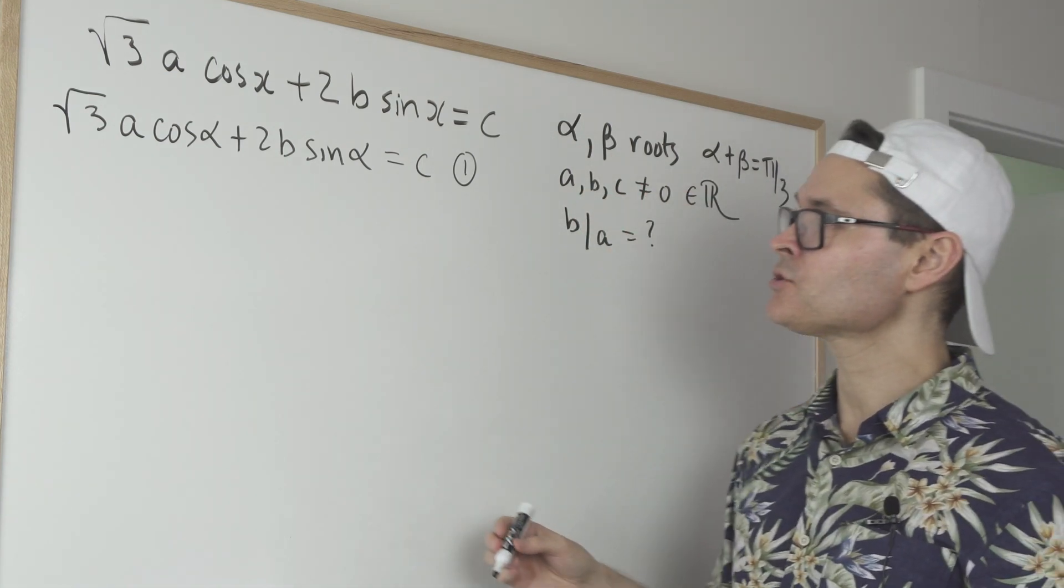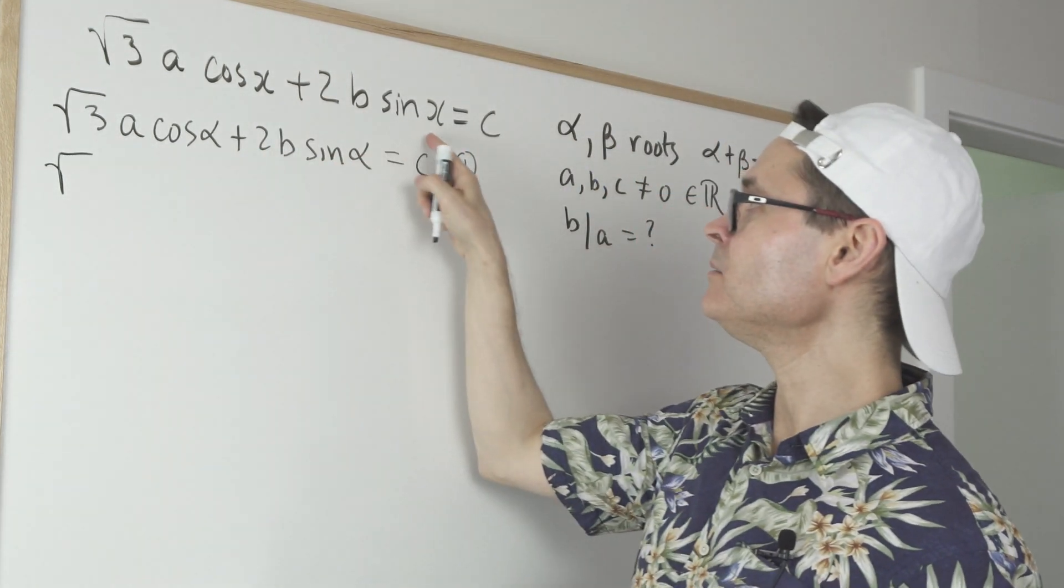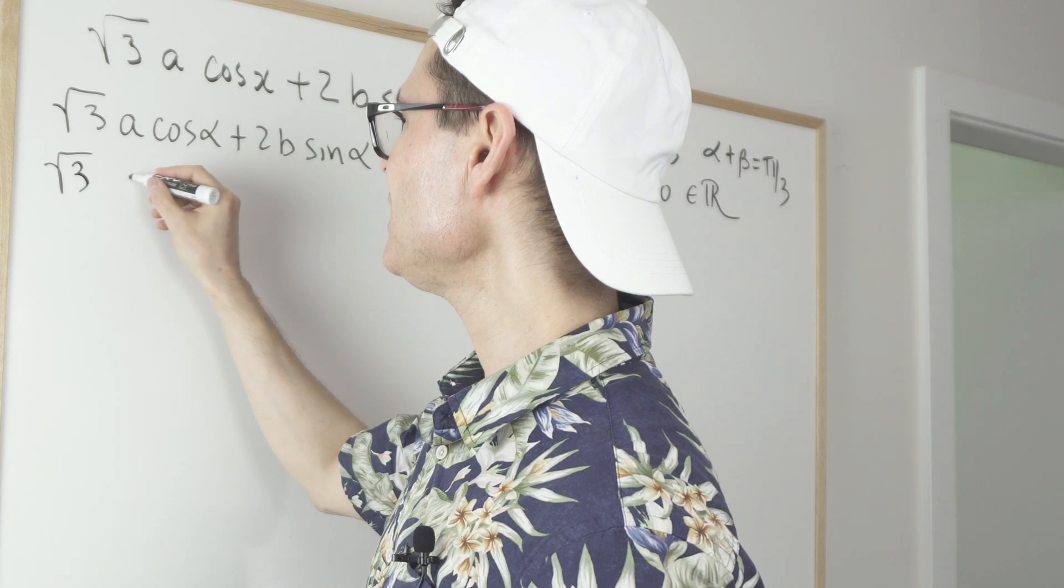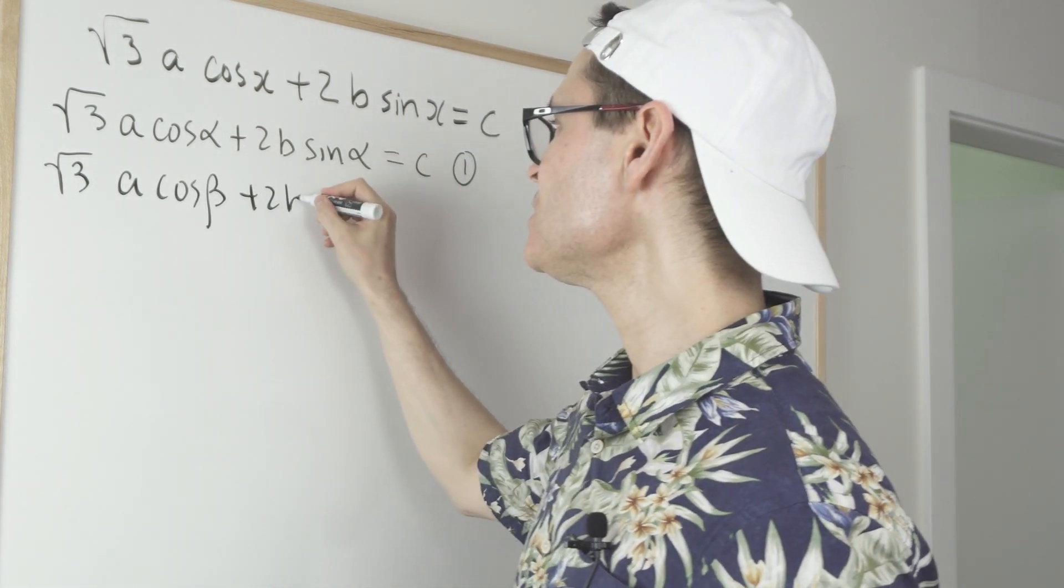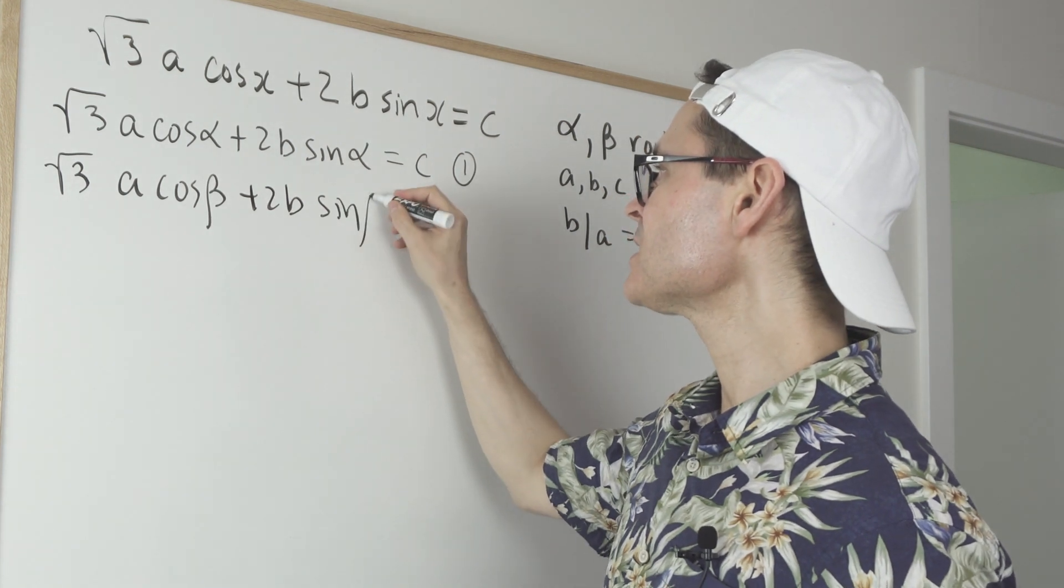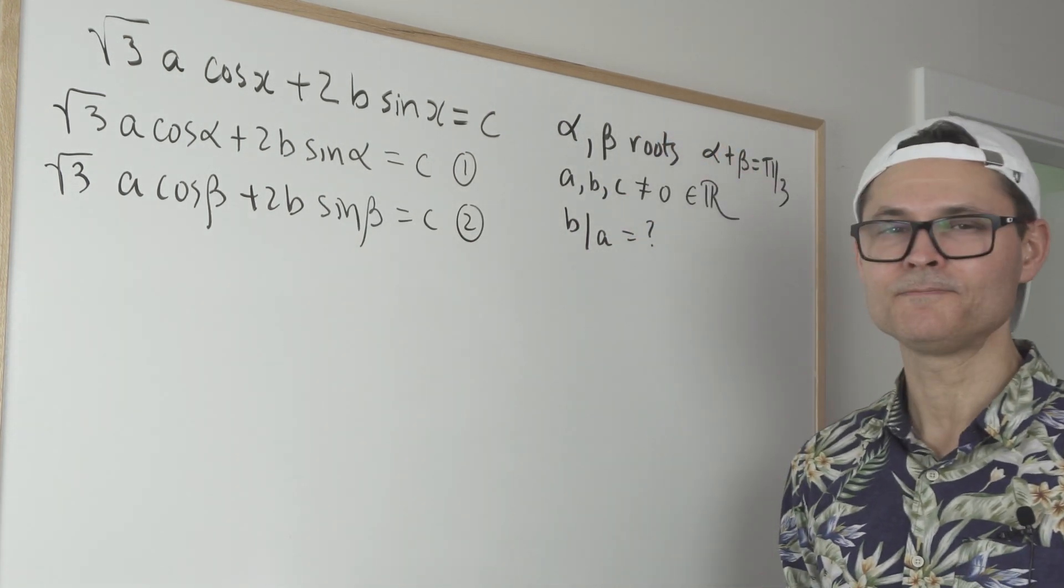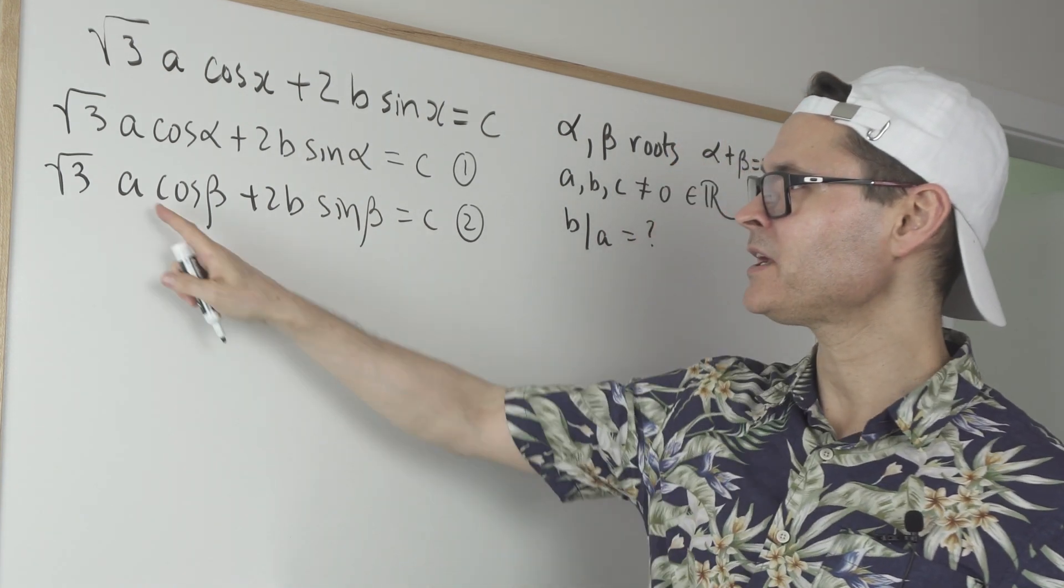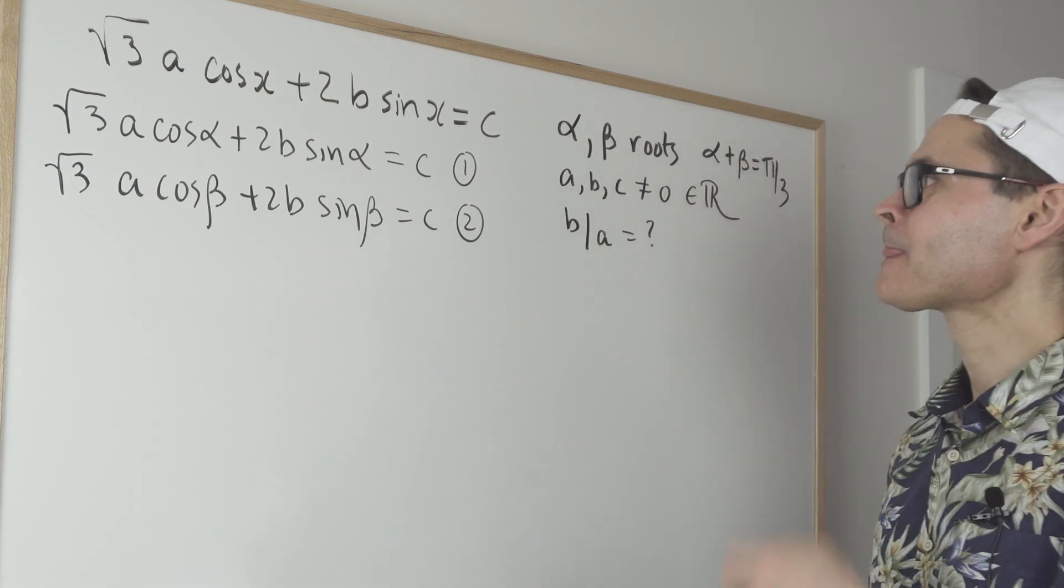And since beta is a root, we can also write it like this. We can plug beta in because it balances the equation. So √3A cosine β + 2B sine β = C. And there's the second equation. So in a way, we're trying to solve a system, trying to figure out what A and B would be.